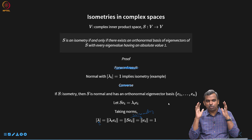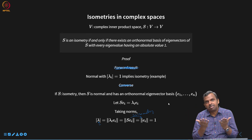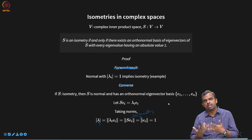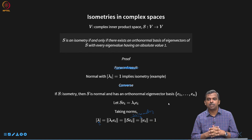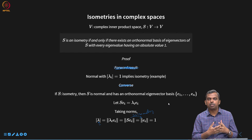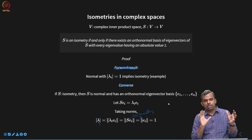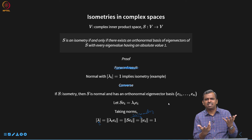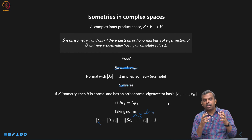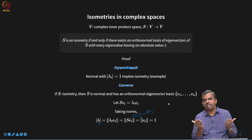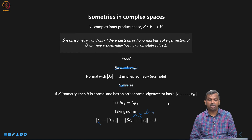In summary, isometries are very interesting operators. In matrix terms, rows and columns are orthonormal — a simple and complete characterization. Alternatively, they are normal operators with all eigenvalues of absolute value 1. Importantly, isometries preserve not just norms but also inner products, so the relationships between vectors are completely unchanged. If you apply an invertible operator that is not an isometry, inner products and relationships between vectors change. Isometries are therefore very powerful and have many applications. Thank you very much.